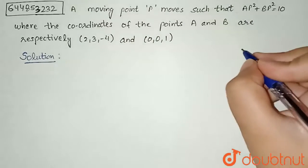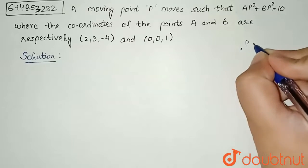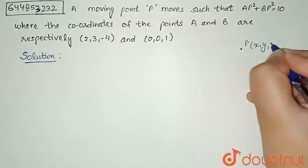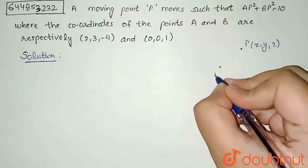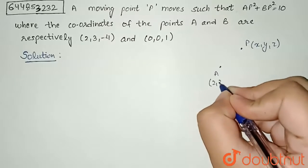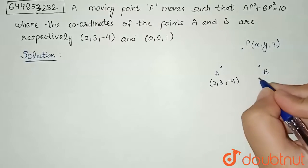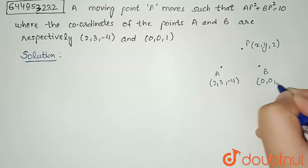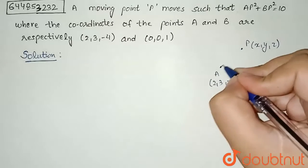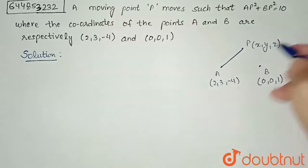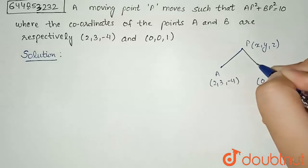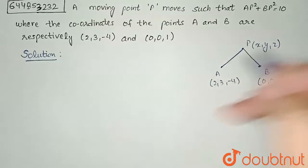Let us assume that this is my point P whose coordinates are (x, y, z). This is my point A which is given to me as (2, 3, -4) and this is my point B whose coordinates are (0, 0, 1). We are given that this AP distance square plus this BP distance square is equal to 10.